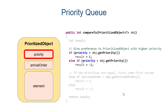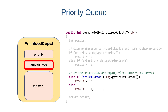So our CompareTo method is going to first check the priority. If the priorities are not equal, that's what we use. However, if the priorities are equal, then we check the arrival order. So either the priority or the arrival order will be different for any two objects. We give precedence to the priority because we want to stress priority over the arrival order, as would happen if we had a regular queue. You can almost think of the priority allowing you to skip line in a queue.